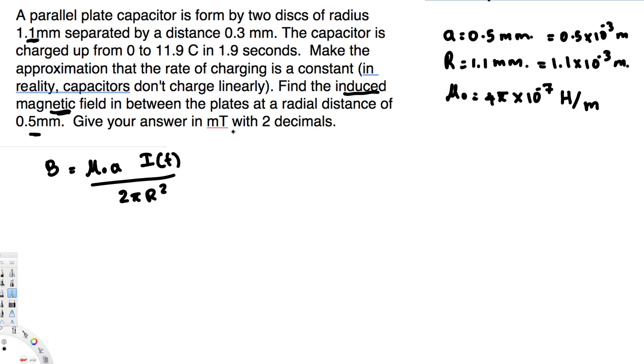And the current is not provided. We have to find out the current. Here they have provided the charge that's going from 0 to 11.9 and also the time. And we know the charge is equal to i is equal to q divided by t.